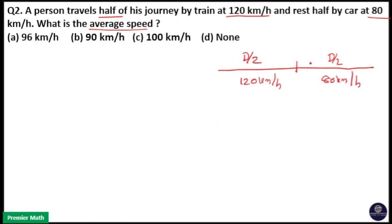So here you can see distance is constant in both cases. In the first case as well as in the second case, distance is constant, that is d by 2.